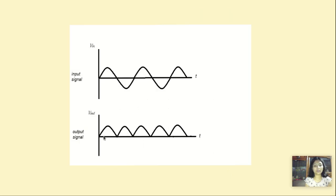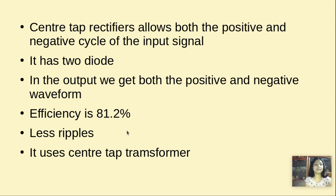As shown in this graph, we get output in both the positive cycle and the negative cycle, but the polarity does not change — the polarity remains the same. So basically, the center-tap rectifier allows both the positive and negative cycle of the input signal. It has two diodes. In the output, we get both the positive and negative waveform. Its efficiency is 81.2%. It contains less ripples and uses a center-tap transformer.